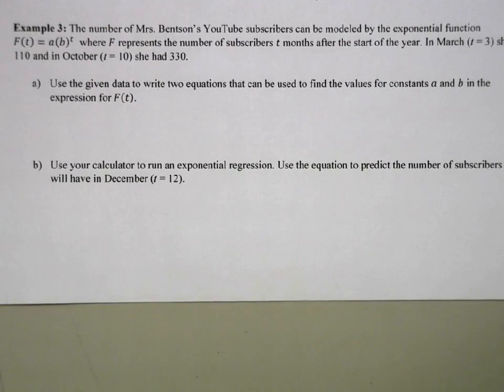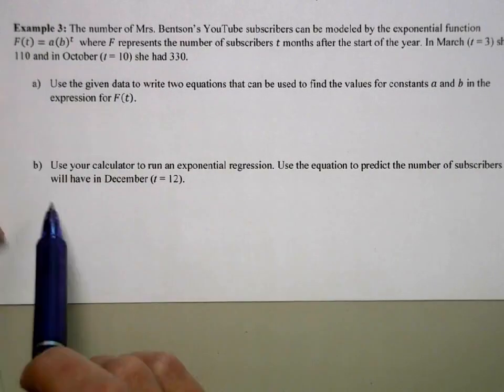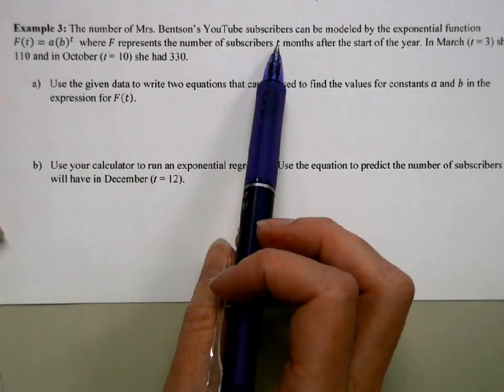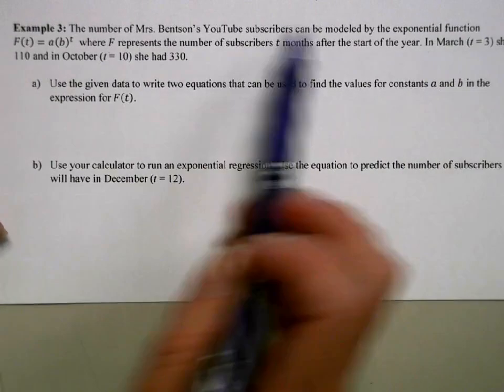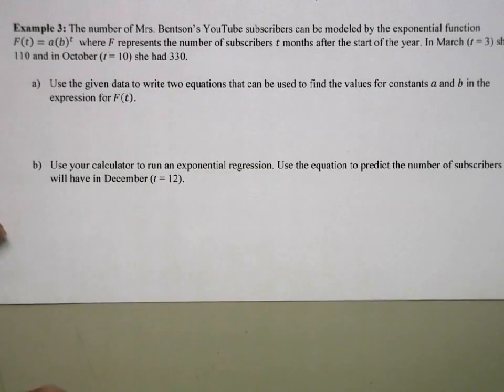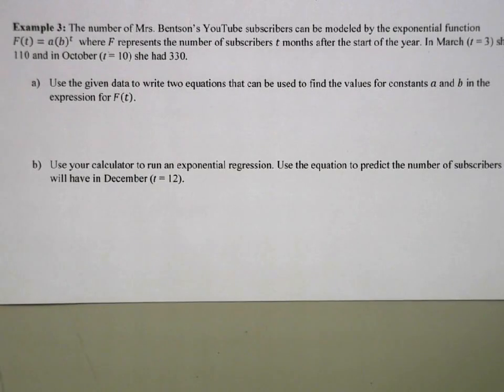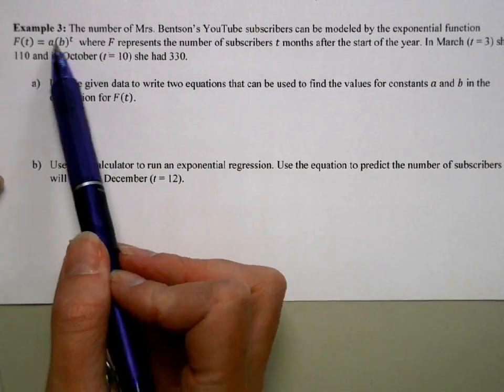So the number of Mrs. Benson's YouTube subscribers can be modeled by the exponential function F(t) = ab^t, where F represents the number of subscribers t months after the start of the year. In March, t equals 3, she had 110 subscribers. And in October, t equals 10, we have 330 subscribers. So we're going to use the data to write two equations that can be used to find the values for the constants a and b in the expression. So what we have is the output value and the input value. We don't know a or b.